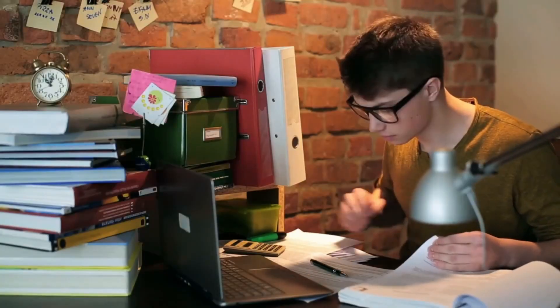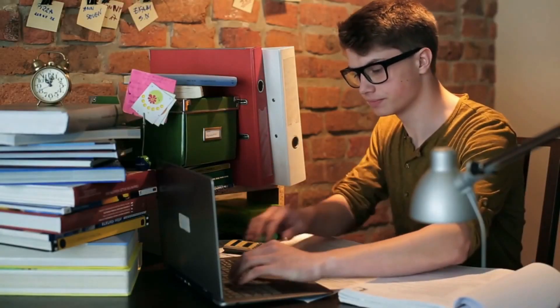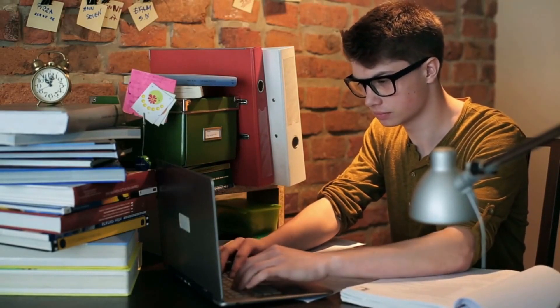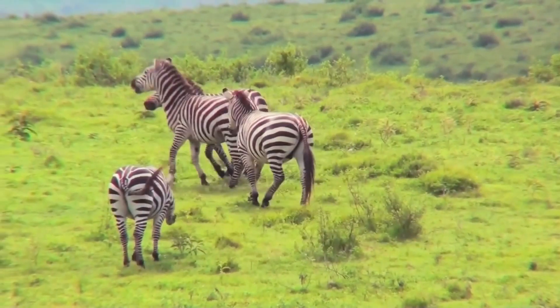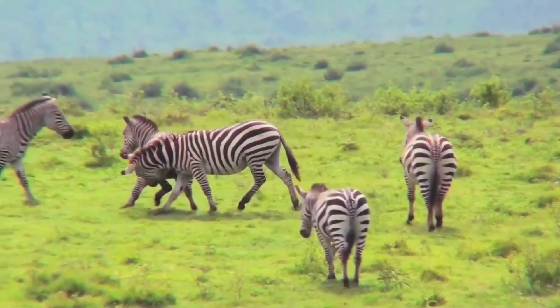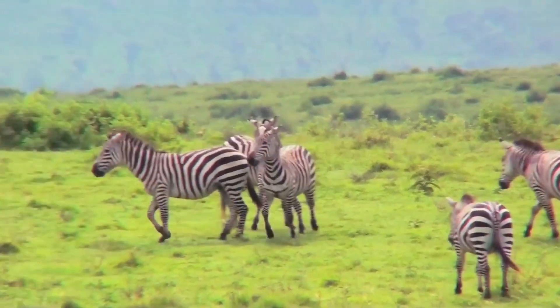But for a typical visual model to learn a new task, it must be trained on tens of thousands of examples specifically labeled for that task. If the goal is to count and identify animals in an image, as in three zebras, one would have to collect thousands of images and annotate each image with their quantity and species.